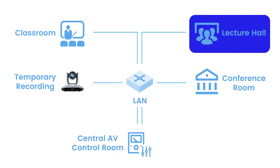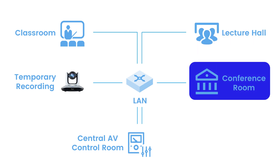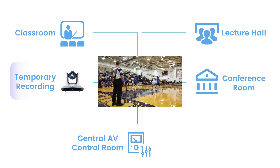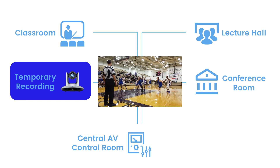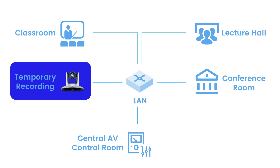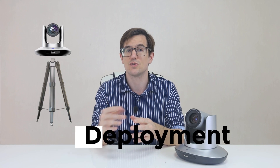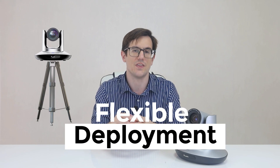Permanently installed cameras and audio equipment in lecture halls can stream and record lessons. The same can be done in conference rooms, and AV equipment can also be temporarily set up for things like basketball games or recording events in rooms without permanent AV fixtures. So now you have a permanent site for control and production, and you can use flexible deployments to stream and record any space on the network.